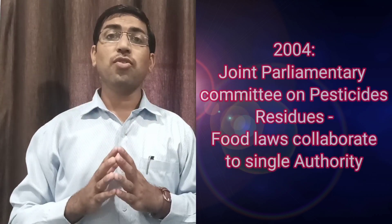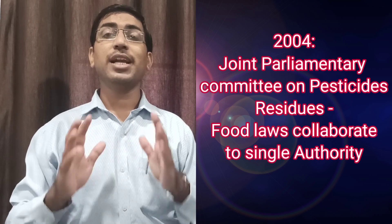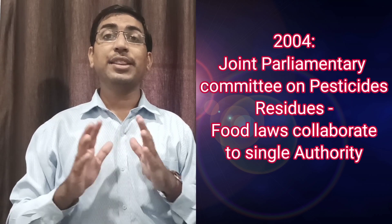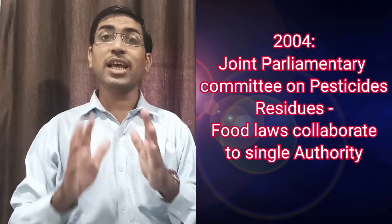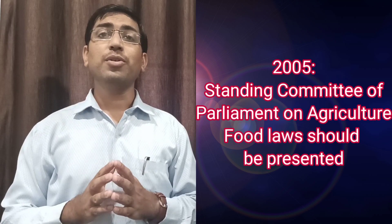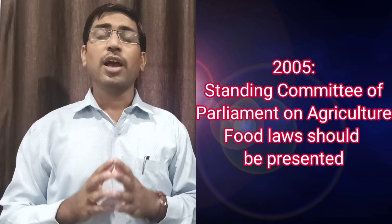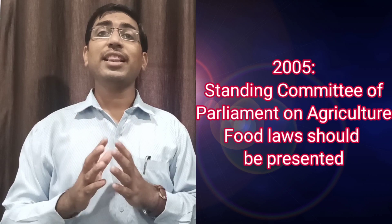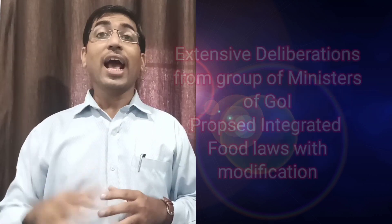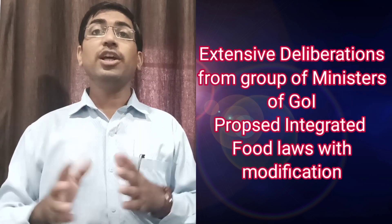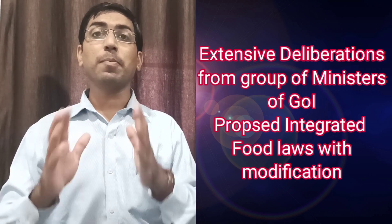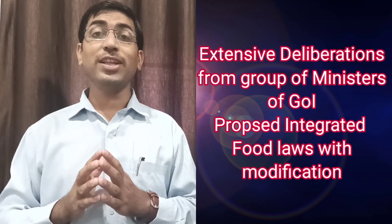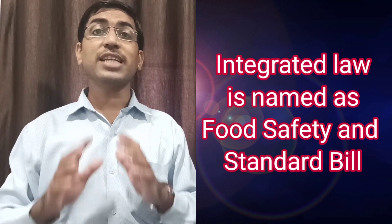In 2004, the Joint Parliamentary Committee on Pesticide Residue recommended that there should be a need to consolidate all the food laws under one single authority. In 2005, the Standing Committee of Parliament on Agriculture in its 12th report desired that food laws should be presented. After that, extensive deliberations were held between a group of ministers of the Government of India and they proposed an integrated draft of the food laws with certain modifications. The integrated law was named as the Food Safety and Standard Bill.